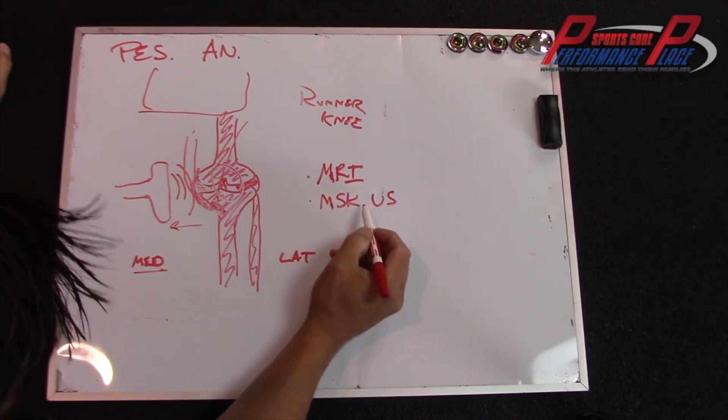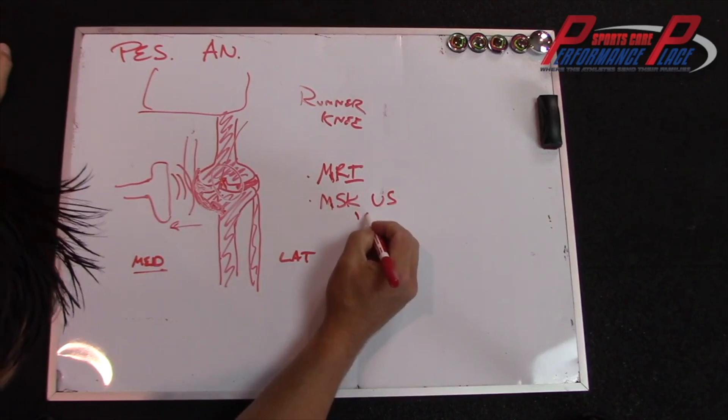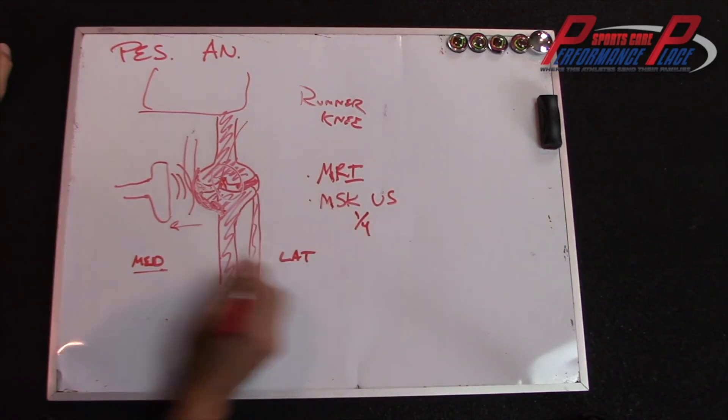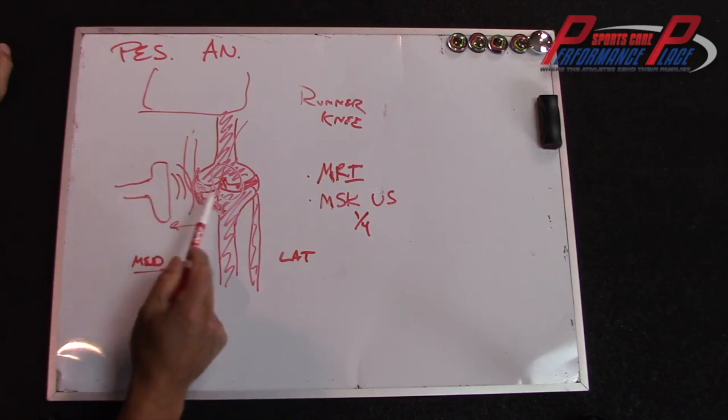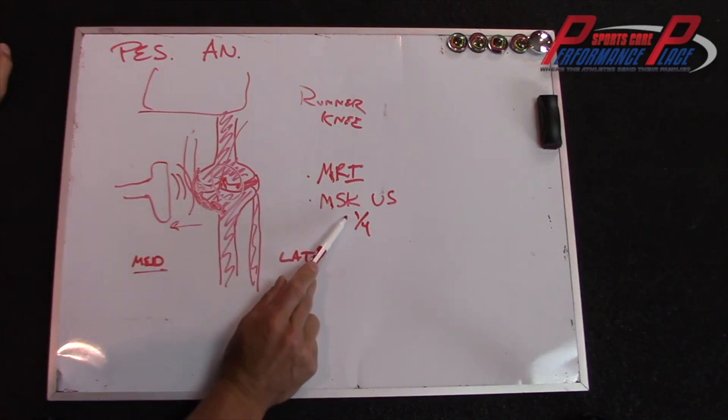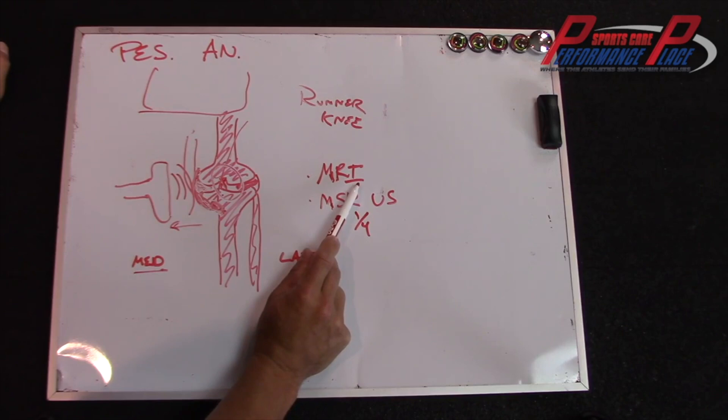An MSK ultrasound is probably about a fourth of the cost and it's just as accurate in seeing this because it's so close to the skin surface. We're just bouncing sound off of it. You don't have to get disrobed, you don't have to change at all, you don't have to go into a tube. And realistically, you can see it in five minutes if you know what you're looking for. An MRI is still going to run you about 30 to 45 minutes of your time after you get in and out of the machine.